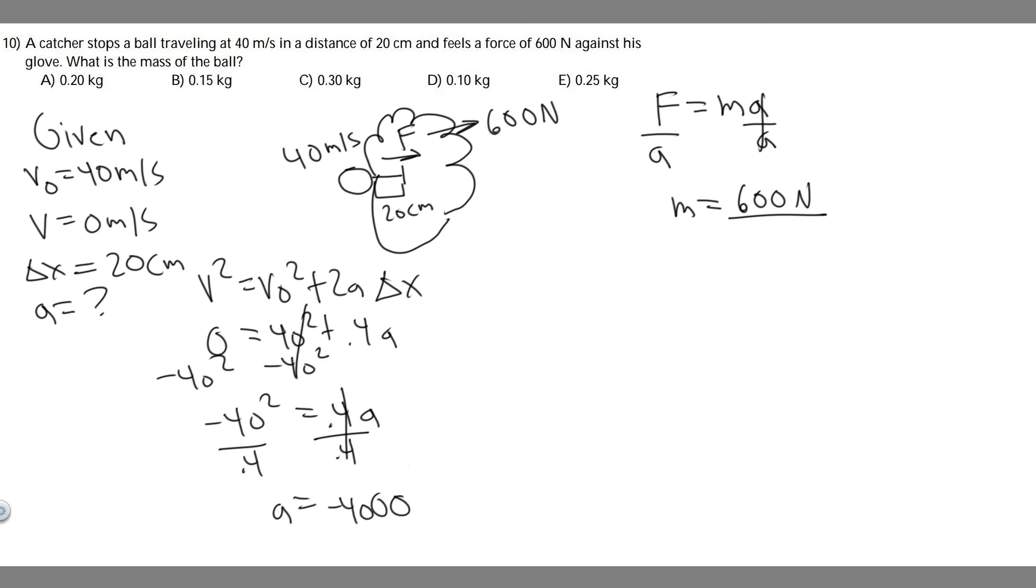Keep in mind that you want to use the magnitude. You don't want the negative value because it doesn't make sense to have negative mass. So you just want to say this is the magnitude of it, so 4000.